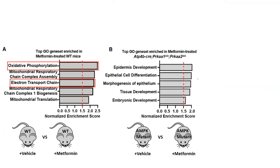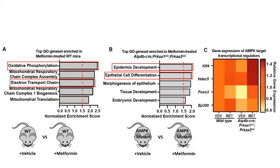More excitingly, in the metformin-treated mutant mice containing only the metformin-responsive progenitors, the top-enriched gene sets were associated with development and differentiation. Microarray analysis further revealed that other transcriptional regulators, including HDAC5, FOXO3, and the transcription factor KLF4, known to regulate stem cell proliferation, were most highly enriched in the metformin-treated mutants, i.e., the progenitor population.